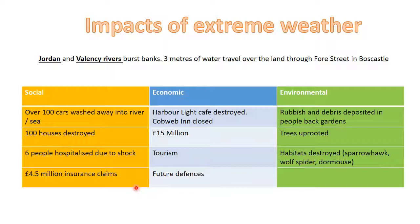The impacts are conveniently split into social, economic, and environmental. We'll pick a couple in each box and talk through what the impact is, trying to extend those impacts. Starting with 100 houses being destroyed: if your house is destroyed you can't live there, which is obviously going to reduce your comfort. As you'll find out in the third video, people ended up living in temporary shelters, including Boscastle Primary School.